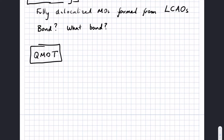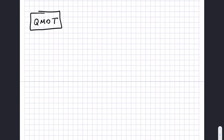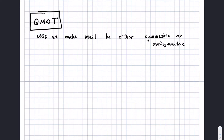The orbitals we make must be either symmetric or anti-symmetric with respect to the molecule's symmetry. For example, consider a trigonal planar molecule — the D3H point group. This molecule has a C3 axis of symmetry running straight down the middle; if you rotate it 120 degrees, it's the same thing. On each M-H bond there is a C2 axis, meaning you can rotate 180 degrees around it and get the same thing — three C2 axes, one for each M-H bond.